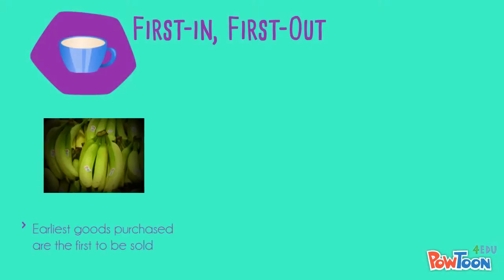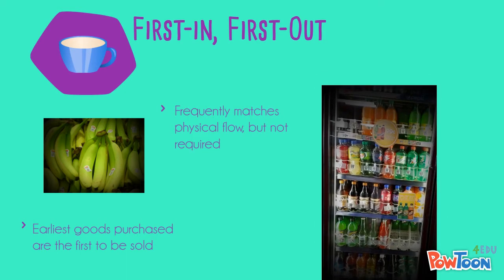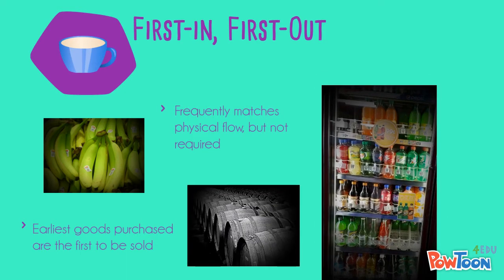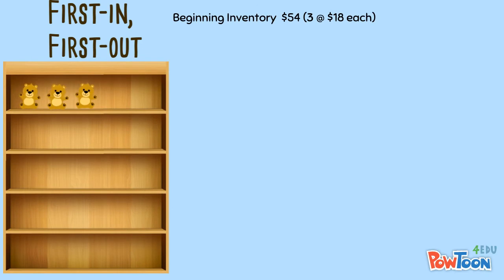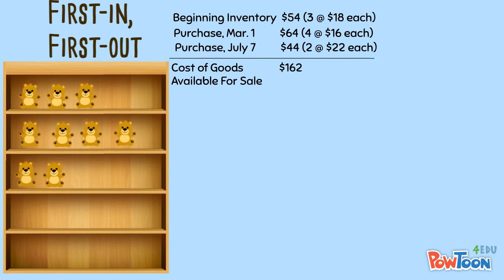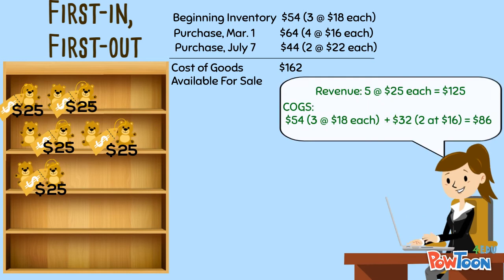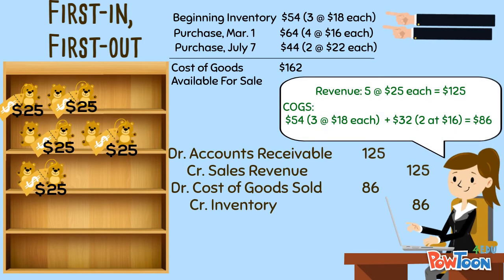In First In First Out, we are assuming that the earliest goods purchased are the first to be sold. This most often matches the sales of the physical items, but that doesn't have to be the case. For example, during the year we make various purchases of bears for our inventory at varying wholesale prices. If we then sell five bears, under FIFO the cost of goods sold would be calculated using the first sales. In this example, cost of goods sold would be $86.